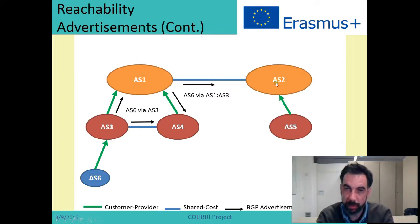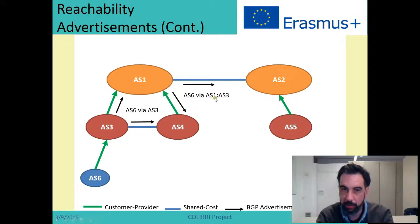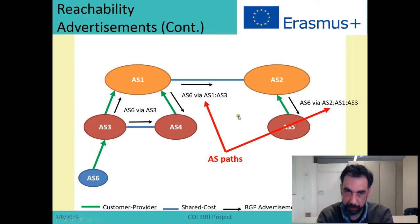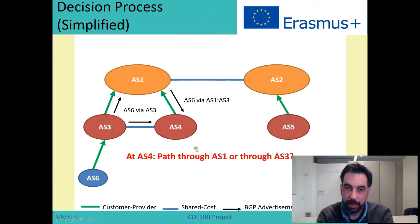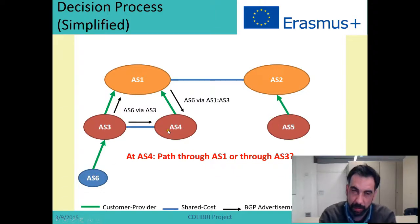Now AS2 knows that in order to reach AS6, it has to go to AS1, and then AS1 goes through AS3 to AS6. They always prepend the AS number to the path so that this is the actual path to follow — to reach AS6 you go to AS1 and then to AS3. AS2 will further propagate the information, so now AS5 knows how to reach AS6. This is what is called the AS path. Now, if AS4 wants to go to AS6, there are two paths it has learned: it can go through AS1, AS3, AS6, or take a more direct route through AS3, AS6.